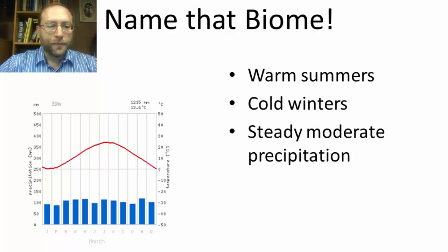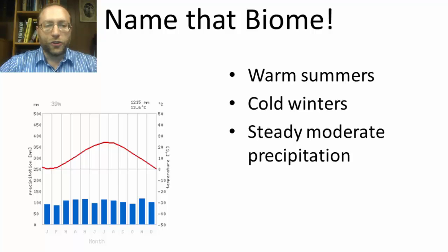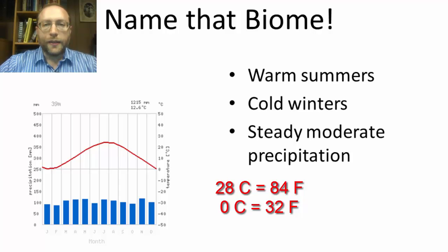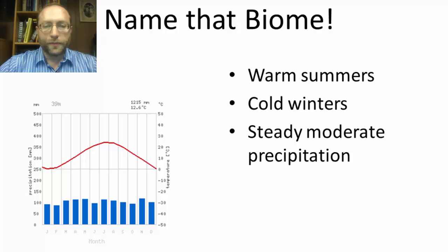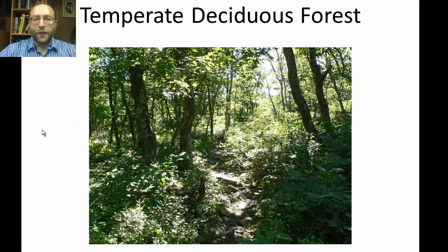Now, for the next biome, look at this climate graph. We've got moderate amounts of precipitation, and it tends to be very steady throughout the year — no rainy seasons and dry seasons. The temperature has definite seasonal fluctuations: it can get warmish during the summers but not really hot like in the desert, and pretty cold during the winters. What type of biome is that? It's actually our biome — the temperate deciduous forest. This picture, believe it or not, is New Jersey. That particular trail is the most famous hiking trail in the United States, possibly the world: the Appalachian Trail.